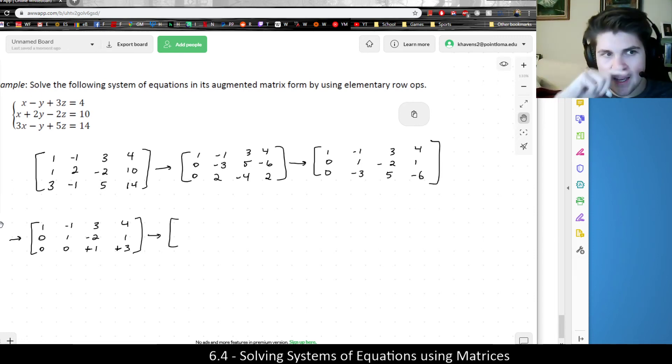So next, I want to take two times row three and add it to row two. Again, now that row three is solved, I'm done messing with that. And I know that z is equal to three. But if I multiply by two and add it to row two, those two will stay the same because each was zero before. And then I will get one times two is two, plus negative two is zero. Three times two is six, plus one is seven. And that should give me the solution for y.